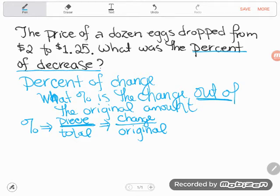Let's go back to our problem. It says the price of a dozen eggs dropped from $2 to $1.25. So we know the starting amount, $2 or original. We know the ending amount, $1.25. But what we don't know is the change. How much did it change by if it started at $2 and ended at $1.25?